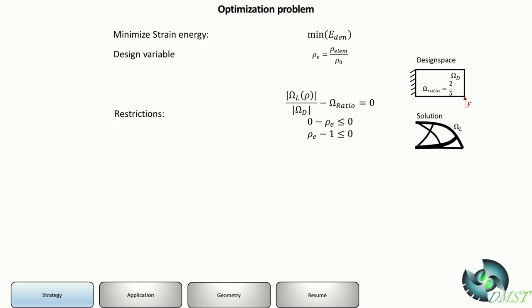So the optimization problem: what we want is we want to minimize the strain energy, I call it E_d. What we have is a design variable, it's a normalized density. The restrictions are: I have a design space omega_d and a solution space omega_l, and I have a factor called omega ratio.